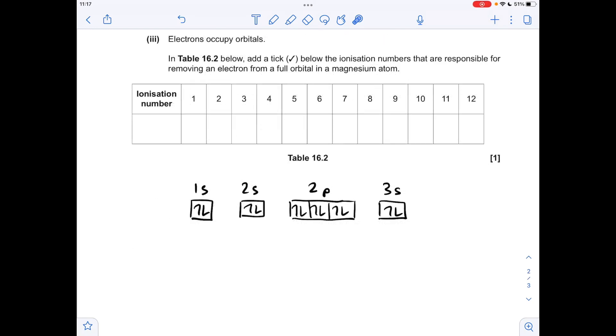Moving on to the final part of the question, you'll notice I've drawn up the electrons in box representation for the magnesium atom. So which of the ionization energy numbers involve taking electrons out of a full orbital? Well, the first ionization energy is going to be to take one of these electrons out. So that's full.